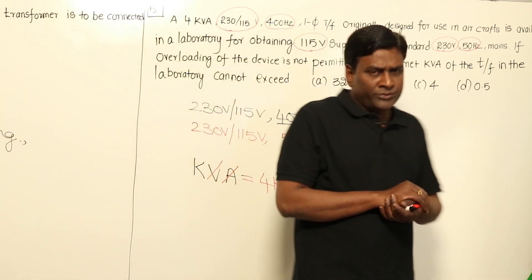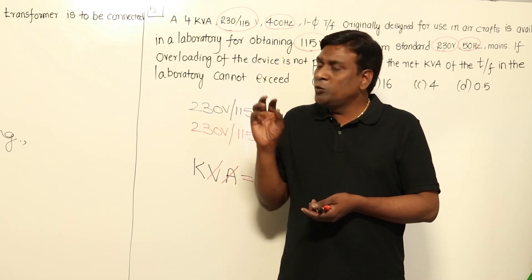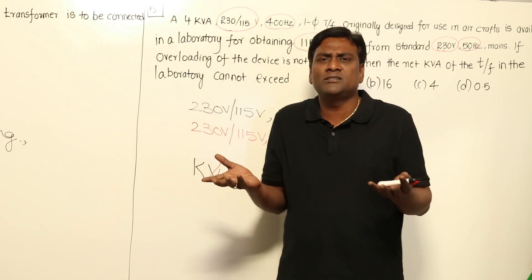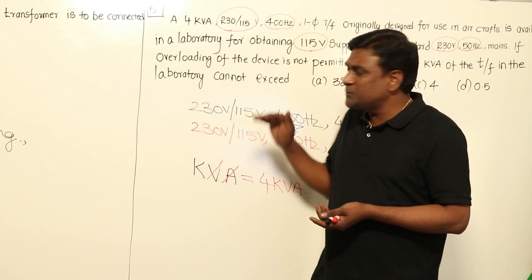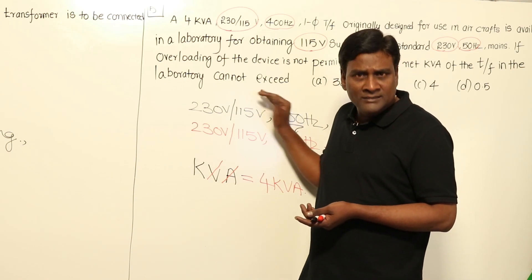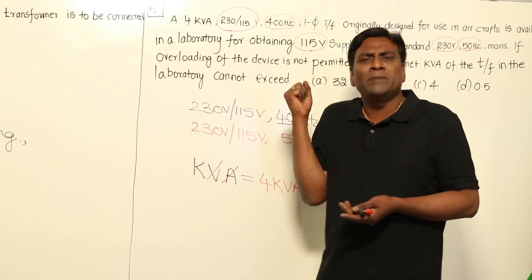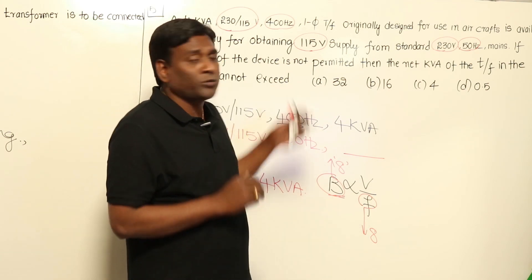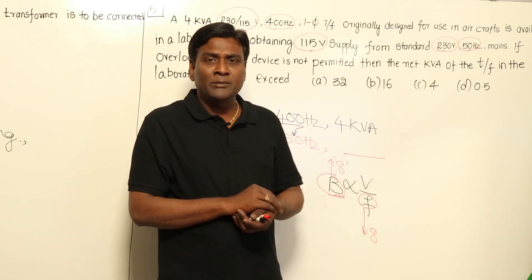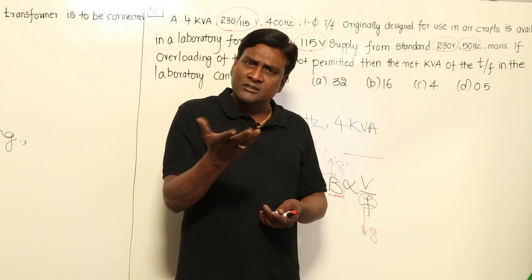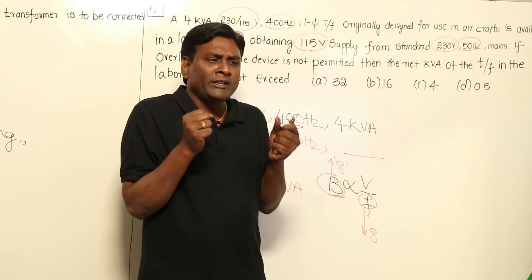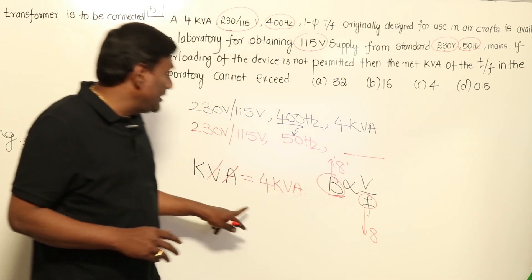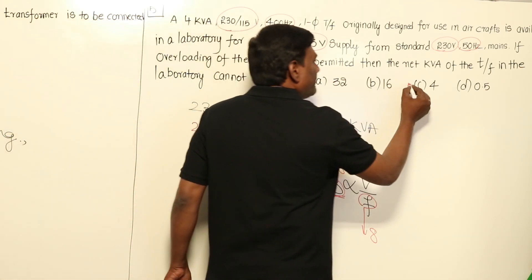Comparing the two questions: in the previous GATE question, we had the chance to maintain flux density constant, so by machine sense we maintained it constant. But in this IAS question, he is not allowing us to maintain flux density constant — voltages are fixed. So let the machine have over-fluxing; let flux density increase by 8 times. We cannot change the question, and in an exam we cannot argue that flux density should be constant. In an interview we can argue, but not in an exam. So flux density increases, kVA remains 4kVA — that is the final answer.